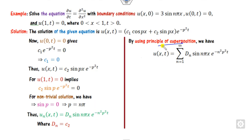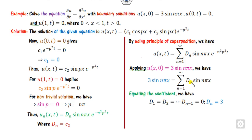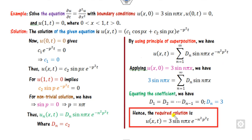Using the superposition principle as discussed in the wave equation, we write the general solution as a series. Applying the initial condition at t equals zero makes the exponential equal to 1. Equating coefficients: for n equals 1, d1 times sine(πx) matches the given sine term, so d1 is found; d2 and all other d_n are zero except the matching term. Substituting gives the correct final answer.